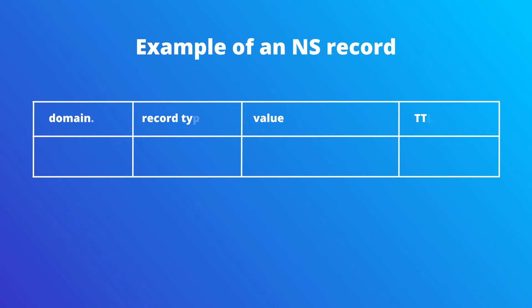Number four is NS record, or name servers. Name servers are the servers where all the DNS records are stored. In order to have a site live, you will need to have properly configured your name servers. Name servers are provided by domain name registrars or hosting providers. Now you can see an example of an NS record: for domain.com, the record type will be NS, the value will be ns1.domainserver.com, and for TTL you will have 21,600.